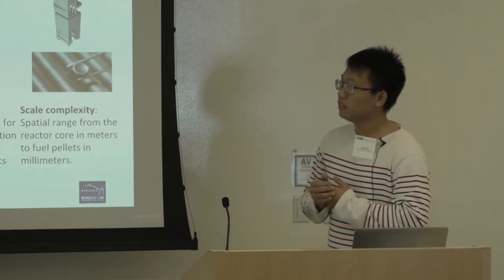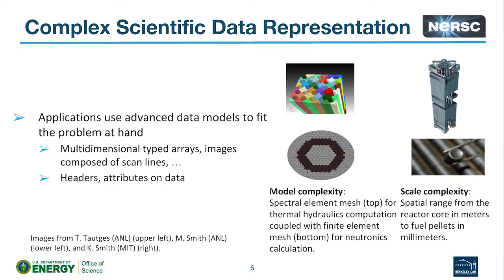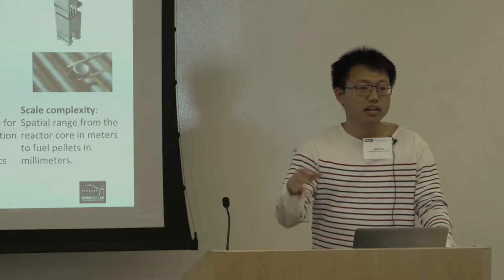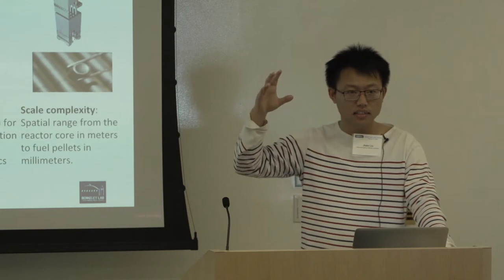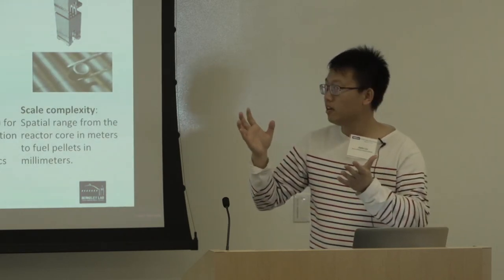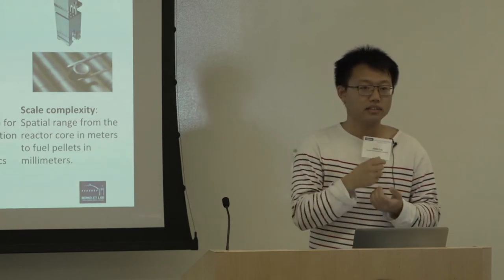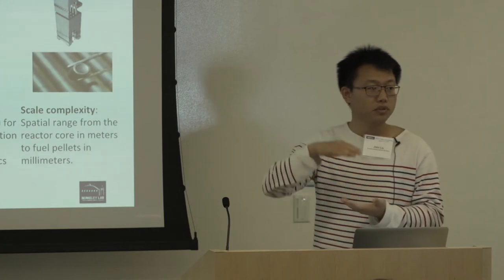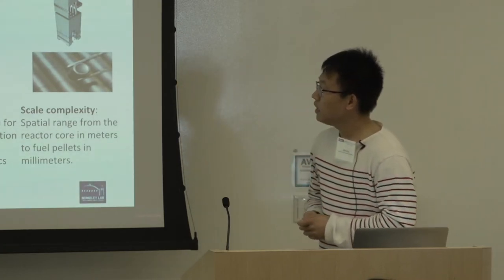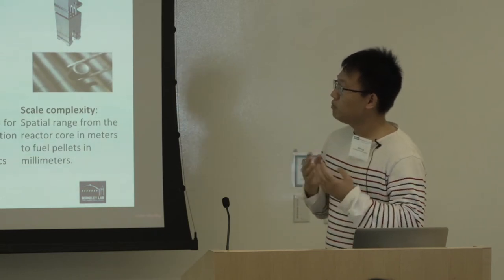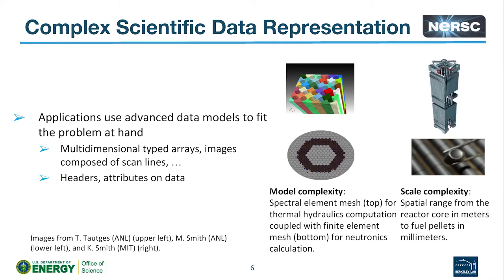The second major factor is the difference between how humans and machines describe real-world problems. For scientific data, we typically describe models in a way familiar to us — for example, in climate science we have 3D data: latitude, longitude, and height. But at the hardware layer, it only understands bytes. That mismatch between application and hardware is the second major factor bringing I/O issues, and it's why we need many middle layers to bridge that gap.